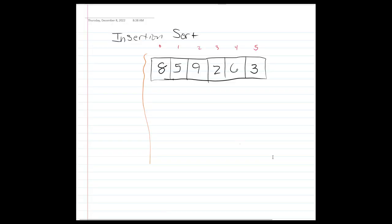Let's look at applying insertion sort to this array. We have indices 0 through 5, so six elements. I'd like to do two things: consider the efficiency or complexity — meaning how quickly it sorts an array — and also get a sense of how the algorithm works.